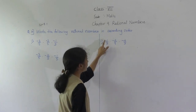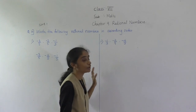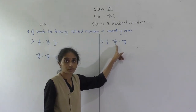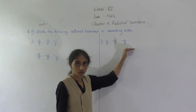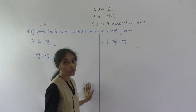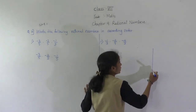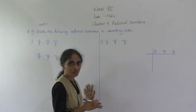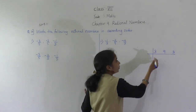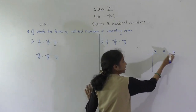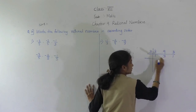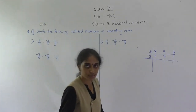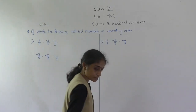Second example: minus 1 upon 3, minus 2 upon 9, and minus 4 upon 3. Denominators are different (3, 9, 3). LCM of 3, 9, and 3 is 9. Multiply minus 1 upon 3 by 3 to get minus 3 upon 9. Minus 2 upon 9 stays as minus 2 upon 9. Multiply minus 4 upon 3 by 3 to get minus 12 upon 9.